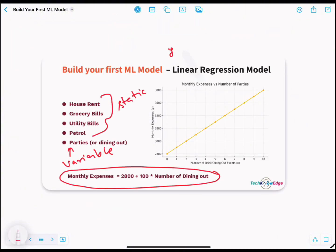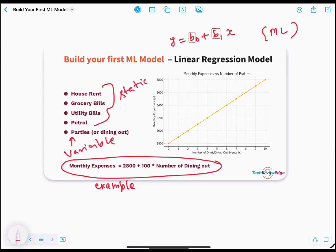y is your monthly expenses, c is your constant which is static. So in ML terms, if you really look at it, the same equation can be written like y equals b0 plus b1x. Well, y equals total expenses, b0 is base cost, say 2,800. b1 is cost per party, say 100, and x is number of parties.